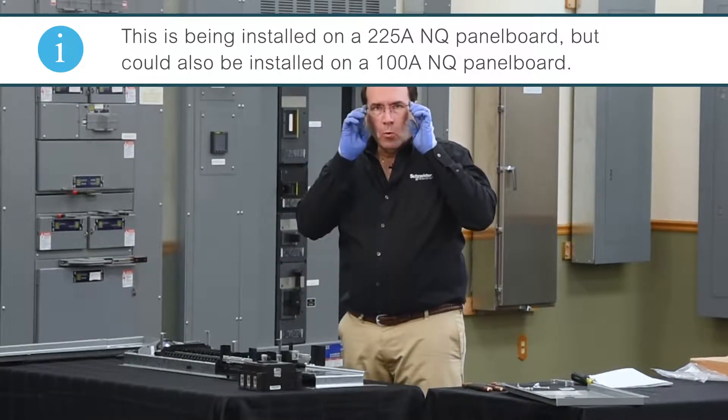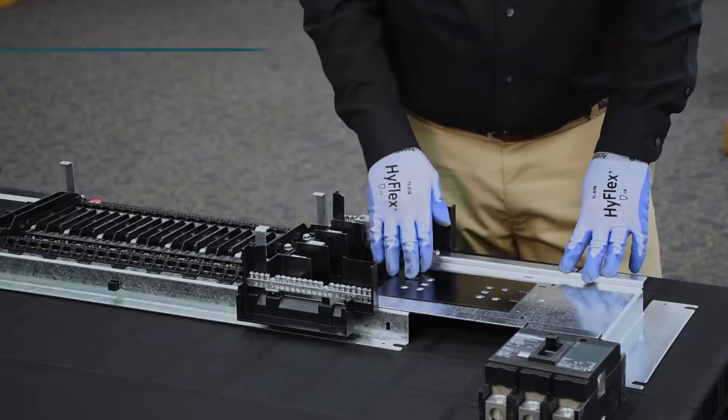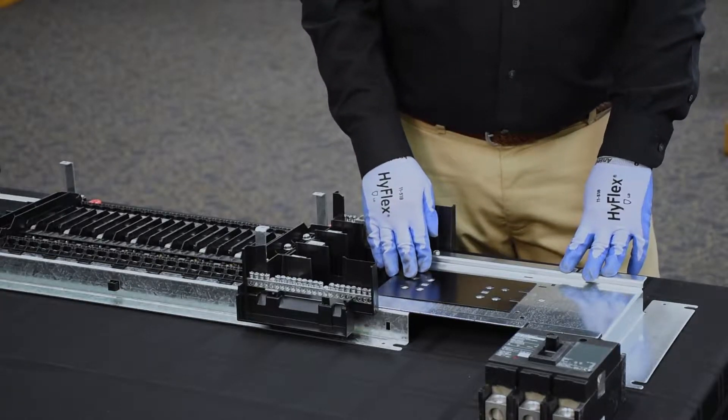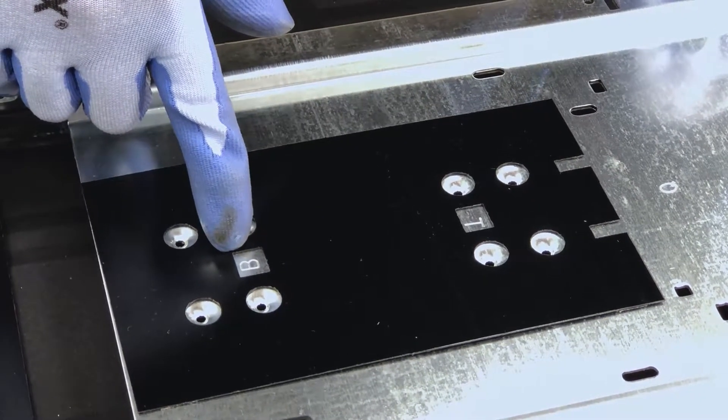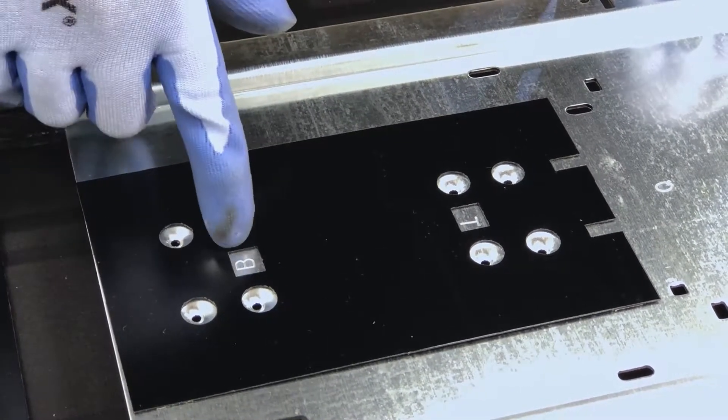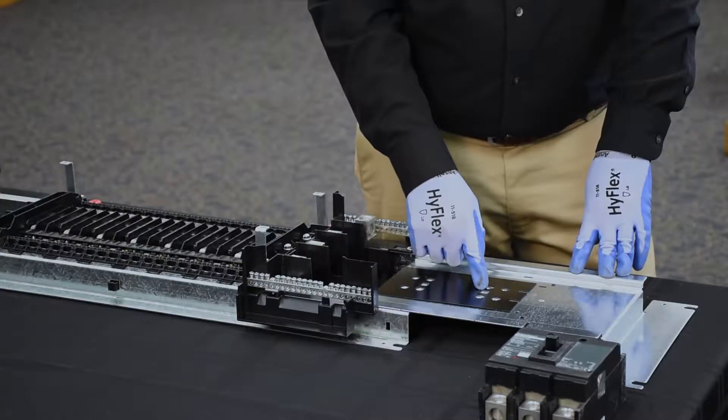Next, we'll position the breaker onto the mounting pan based on feed direction. The mounting pan has eight holes, two sets of four. There's a B mark for bottom feed for the set of holes to be used for bottom feed, and there's a T mark for top feed for the holes to be used for top feed.